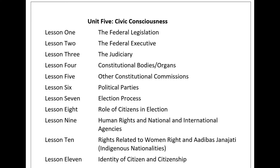Article 12: No one shall be subjected to arbitrary interference with their privacy, family, home, or correspondence, nor to attacks upon their honour and reputation. Everyone has the right to the protection of the law against such interference or attacks. Article 13: (1) Everyone has the right to freedom of movement and residence within the borders of each state. (2) Everyone has the right to leave any country, including their own, and to return. Article 14: (1) Everyone has the right to seek and enjoy in other countries asylum from persecution. (2) This right may not be invoked in cases of persecution arising from non-political crimes or acts contrary to the purposes and principles of the United Nations. Article 15: (1) Everyone has the right to a nationality. (2) No one shall be arbitrarily deprived of their nationality or denied the right to change their nationality.